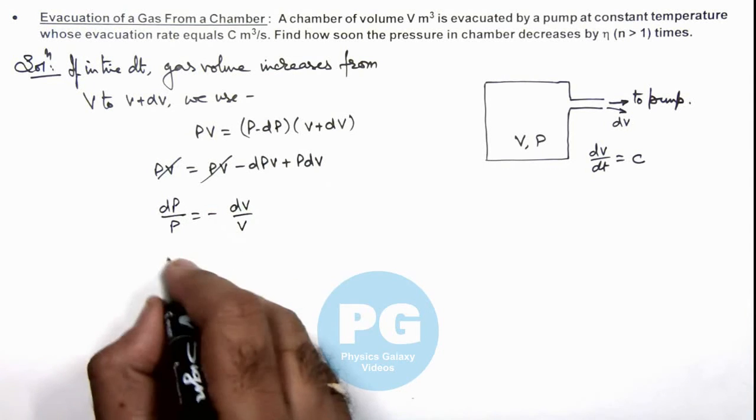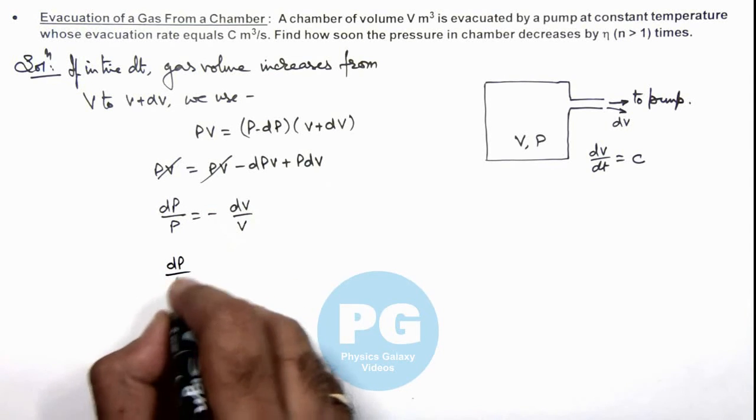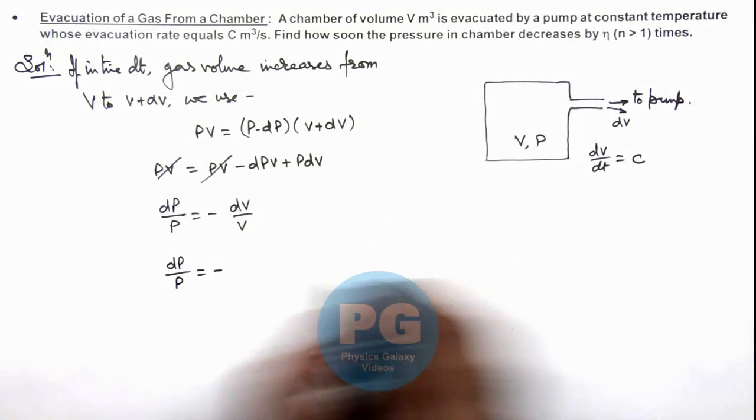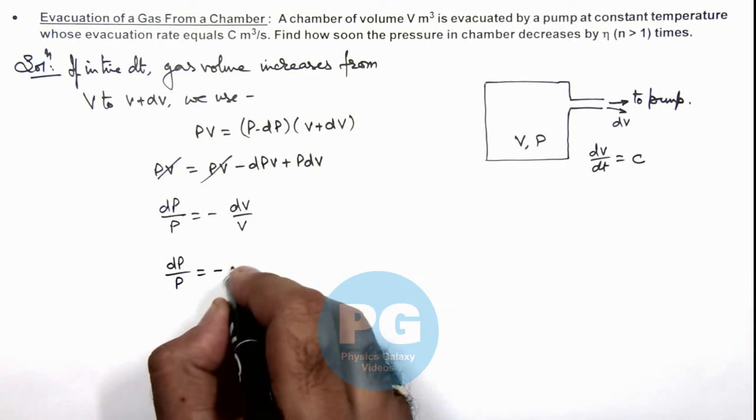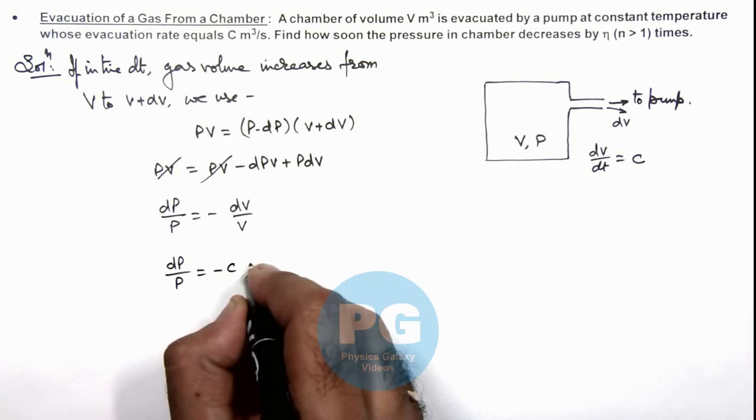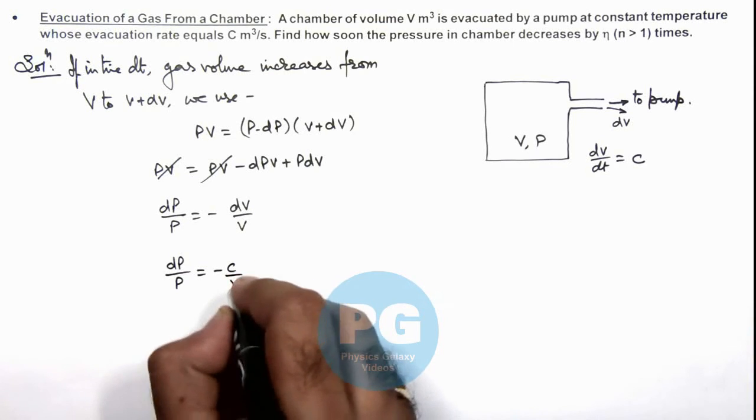And further we can write dP/P = -dV. We can write C times dt, so this is -C/V multiplied by dt.